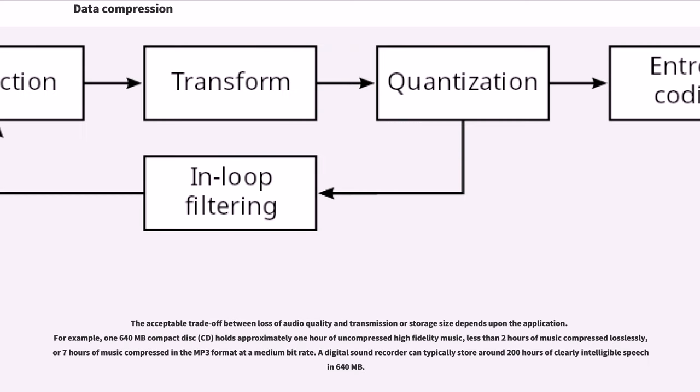The acceptable trade-off between loss of audio quality and transmission or storage size depends upon the application. For example, one 640 megabyte compact disc (CD) holds approximately one hour of uncompressed high fidelity music, less than two hours of music compressed losslessly, or seven hours of music compressed in the MP3 format at a medium bit rate. A digital sound recorder can typically store around 200 hours of clearly intelligible speech in 640 megabytes.